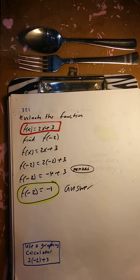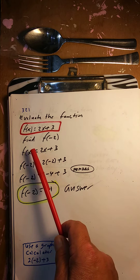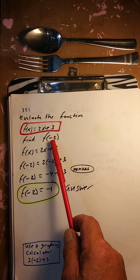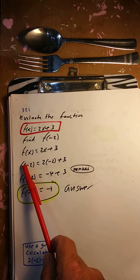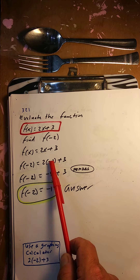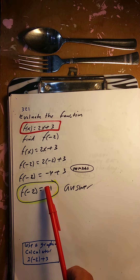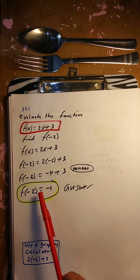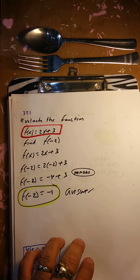Evaluate the function f of x equals 2x plus 3, find f of negative 2. To find f of negative 2, put it in for the x. f of negative 2: 2 times negative 2 is negative 4, plus 3, and that's going to give you negative 1. So f of negative 2 is negative 1. Easy — you can use the calculator.